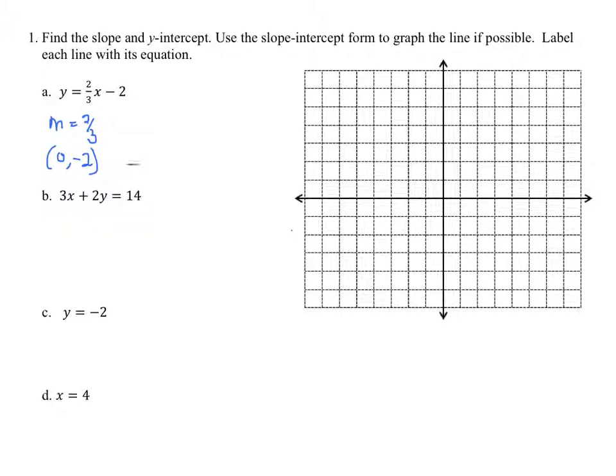So we're going to graph the point. We always start with the point, 0, negative 2, right here. And we are going to use the slope and go for it. So we're going to go up 2, right 3. There he is.